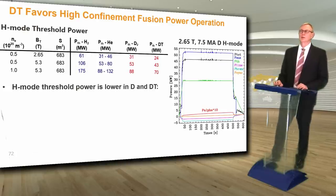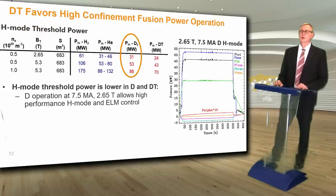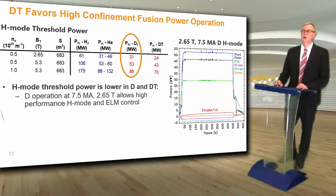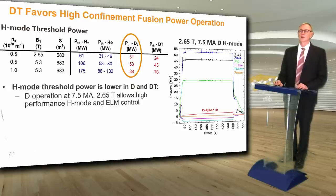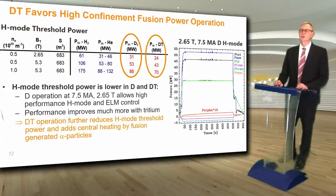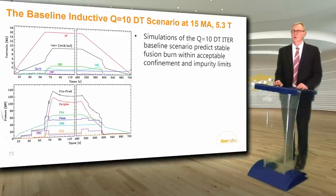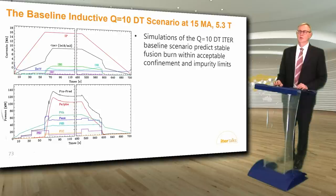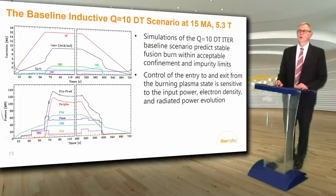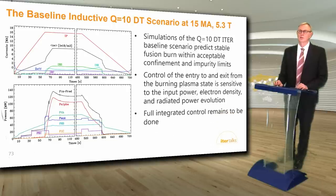Because of the isotope dependence of the H-mode threshold, the threshold power is lower in DT plasmas. Already in deuterium there is significant margin above the H-mode threshold, allowing high-performance H-mode and ELM control at 7.5 megamps and 2.65 tesla. Performance improves even more when tritium is added, and at a 50-50 DT concentration the H-mode threshold is reduced further with additional central heating from fusion-generated alpha particles. The 15-megamp 5.3 tesla baseline Q equals 10 DT scenario predicts stable fusion burn with acceptable confinement and impurity levels. The control of entry to and exit from the fusion burn is sensitive to the input power, electron density, and radiated power evolution. Full integrated control still remains to be done.